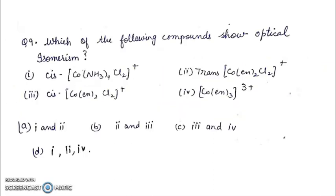Question 9. Which of the following compounds shows optical isomerism? 1st: cis-Co(NH3)4Cl2 +. 2nd: trans-Co(en)2Cl2 +. 3rd: cis-Co(en)2Cl2 +. 4th: Co(en)3 3+. A is 1 and 2. B is 2 and 3. C is 3 and 4. D is 1, 2, and 4. You can pause the video, draw the structures of these compounds, and find the right answer.